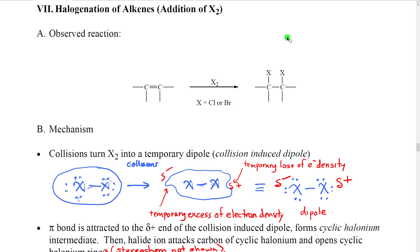The next reagent we are going to look at is halogens. Our observed reaction looks like this. Start with an alkene, treat it with elemental halogen. So in other words, Cl2 or Br2.